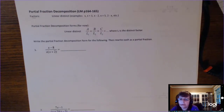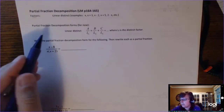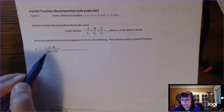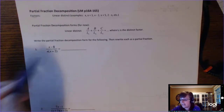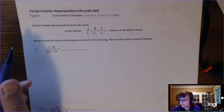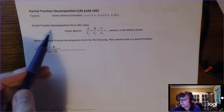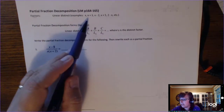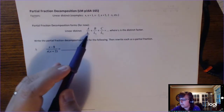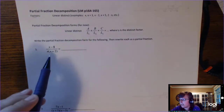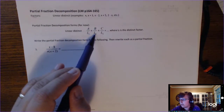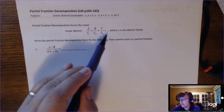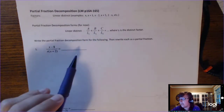This is a notes page on partial fraction decomposition. In this class, we're going to be given a rational expression, and we can turn that into two or more fractions added together. We're only going to be dealing with linear distinct factors, so you've got to make sure the bottom is factored, and then you're going to write this as some number A over one factor, plus some number B over another factor, plus some number C over another factor, where these are all different factors.